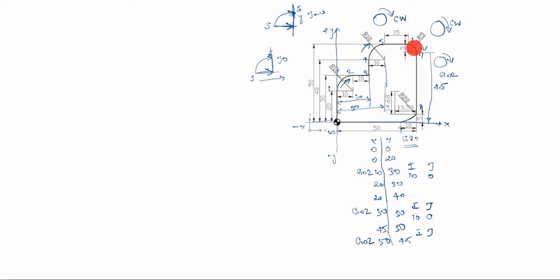Now we will see the I and J value for this arc. You have to draw the arc: starting point is here, end point is here. It touches the X-axis, so I=0. The arrow comes down, Y arrow comes down means this is 5. So J is minus 5 — comes down, so minus 5. I=0, J=minus 5.